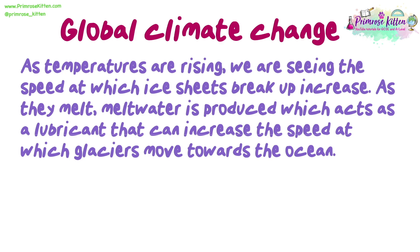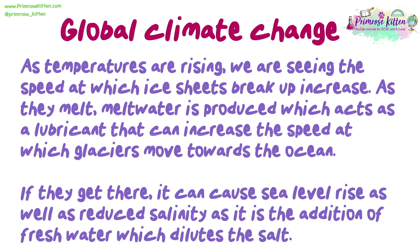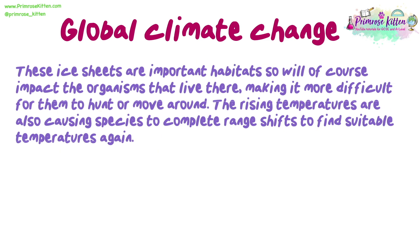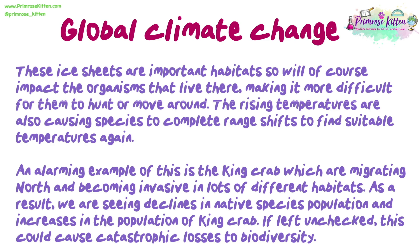Global climate change: as temperatures are rising, we are seeing the speed at which ice sheets break up increasing. As they melt, meltwater is produced which acts as a lubricant that can increase the speed at which glaciers move towards the ocean. If they reach the ocean, it can cause sea level rise, as well as reduce salinity as fresh water dilutes the salt. These ice sheets are important habitats, so their loss impacts organisms that live there, making it more difficult for them to hunt or move around. The rising temperatures are also causing species to complete range shifts to find suitable temperatures. An alarming example is the king crab, which is migrating north and becoming invasive in lots of different habitats, leading to declines in native species and potentially catastrophic losses to biodiversity.